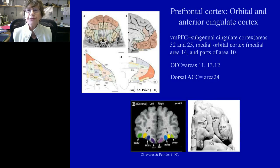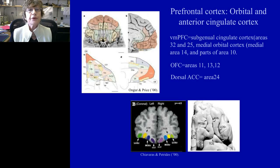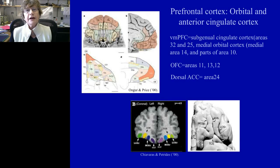These three areas have been associated with different diseases. The ventral medial prefrontal cortex is associated, among other things, with chronic depression, fear, and PTSD. The orbital cortex is associated with obsessive-compulsive disorder and addiction. And the dorsal anterior cingulate cortex is linked to many different psychiatric diseases, including OCD, addiction, and schizophrenia.